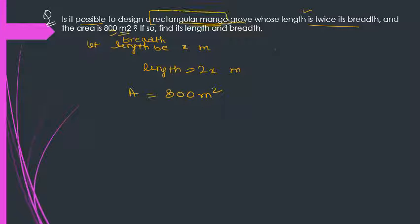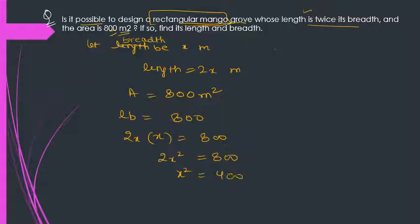Usually when you have a rectangular shape, what is the formula? Length into breadth. What is length? 2x. What is breadth? x. 800. 2x² = 800, x² = 400. So what will be the value of x here? You know very well that there should be two roots, positive and one is negative.